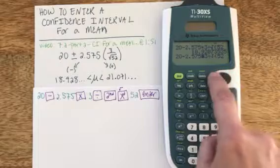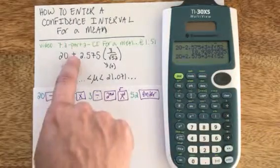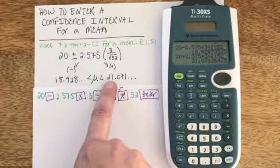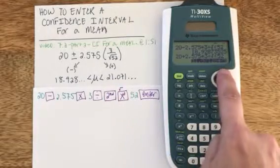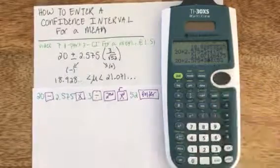And now I can left arrow to where my minus sign was and just change that minus to a plus and hit enter again to get the upper limit of 21.07, etc. So again you just hit up twice, enter, and then you can go change whatever numbers you need to.